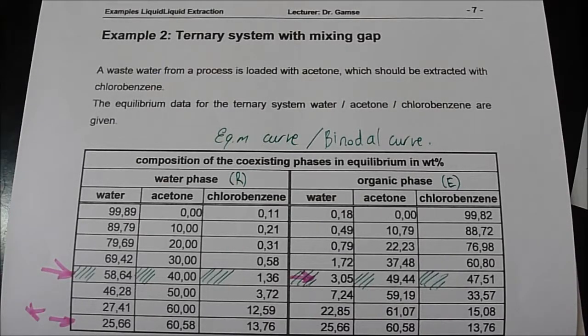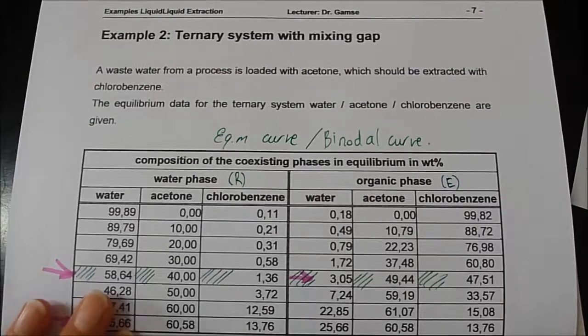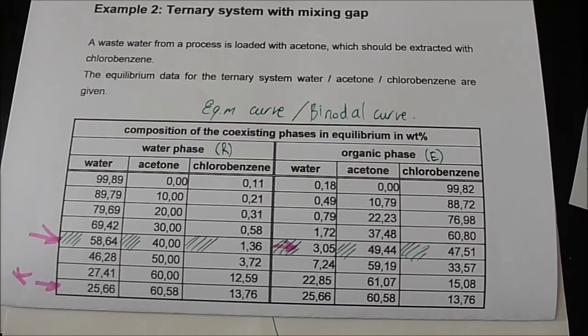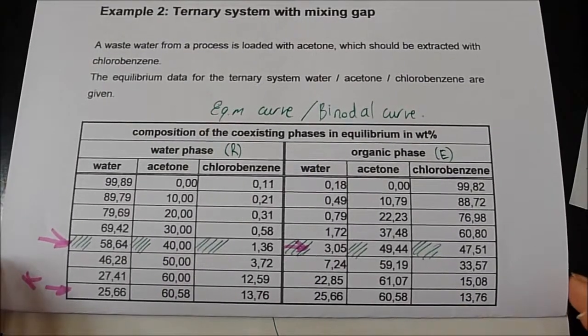This is the second example for the ternary system, and the system has a mixing gap. A wastewater from a process is loaded with acetone, which should be extracted with chlorobenzene. The equilibrium data for the ternary system, which contains water, acetone, and chlorobenzene are given. The data in the table are used to create the binodal curve and the composition of the coexisting phases in equilibrium in weight percent.